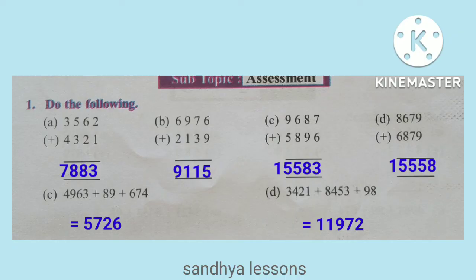9,687 plus 5,896 gives 15,583. 8,679 plus 6,879 gives 15,558. 4,963 plus 89 plus 674 gives 5,726. 3,421 plus 8,453 plus 98 gives 11,972.